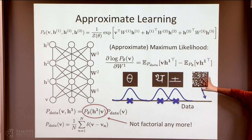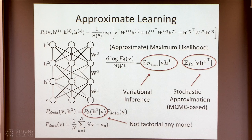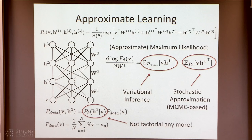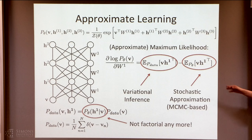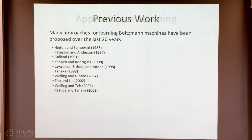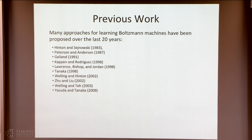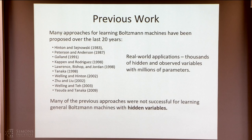One thing you can do is use variational inference to approximate these expectations, and you can use Markov chain Monte Carlo to estimate these expectations. The natural question is: why can't we use MCMC to approximate both? Or why can't we use deterministic variational approximations throughout? There is good reason why it's difficult. A lot of previous approaches were not very successful for learning Boltzmann machines where you have non-trivial connections between hidden variables — algorithms based on contrastive divergence, score matching, pseudo-likelihood, composite likelihood, piecewise learning, MCMC MLE — it's kind of hard to get these models to scale.